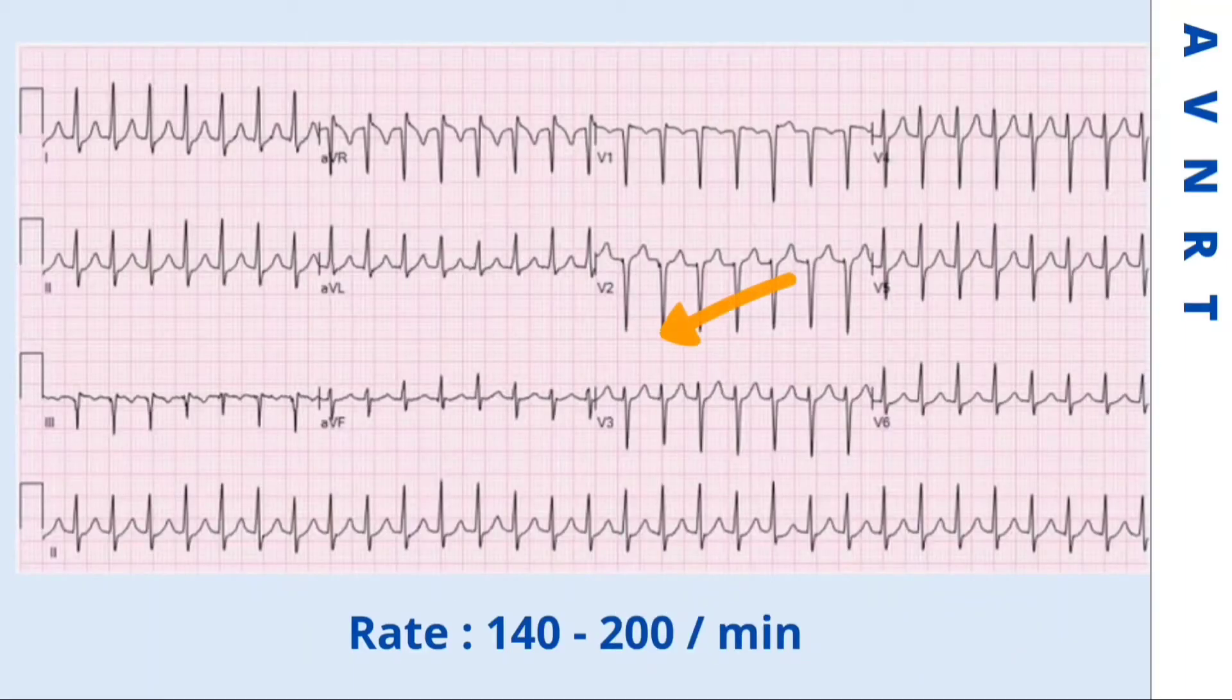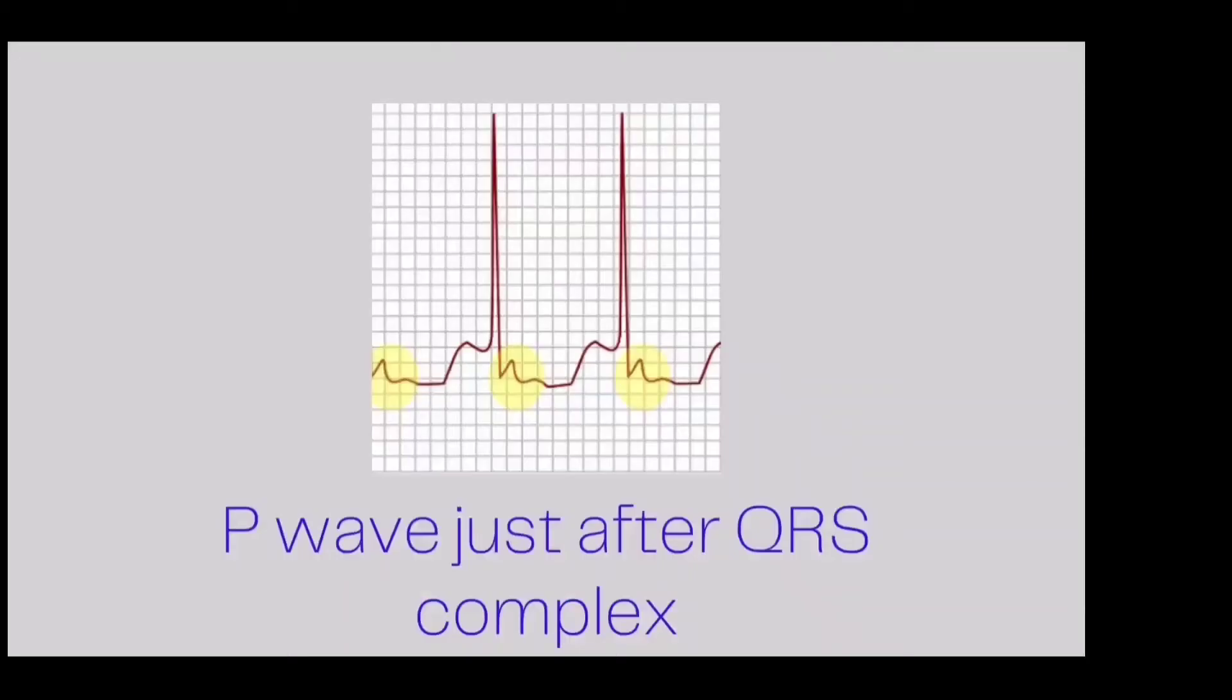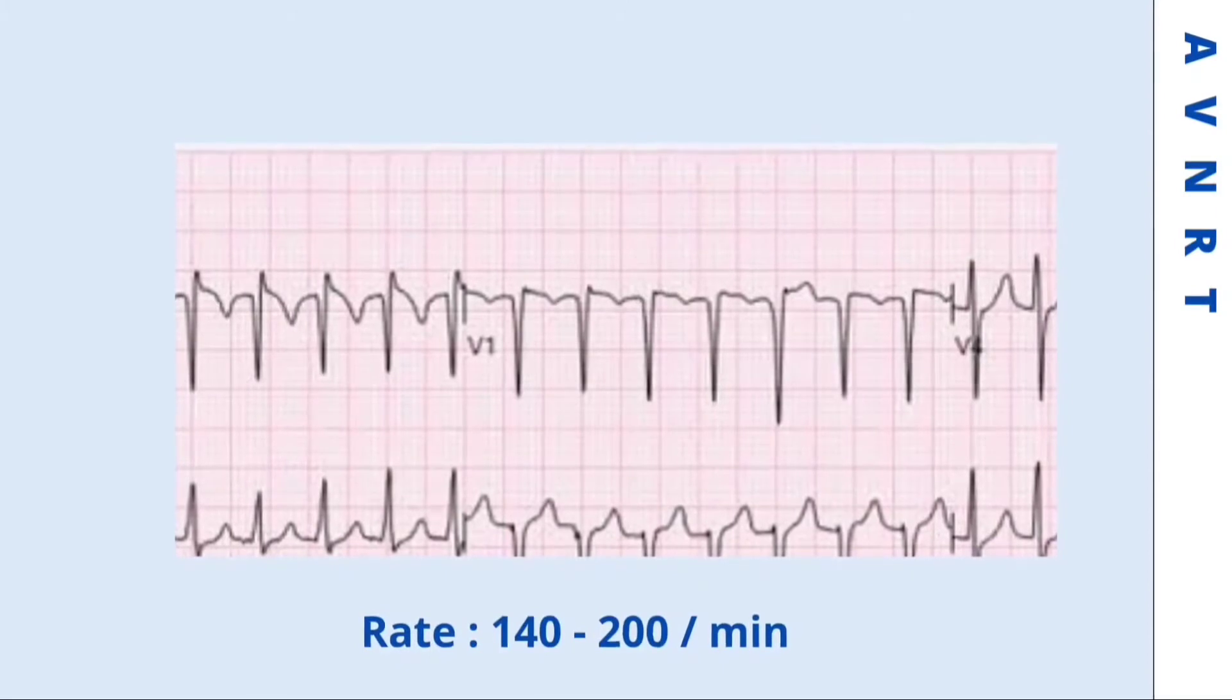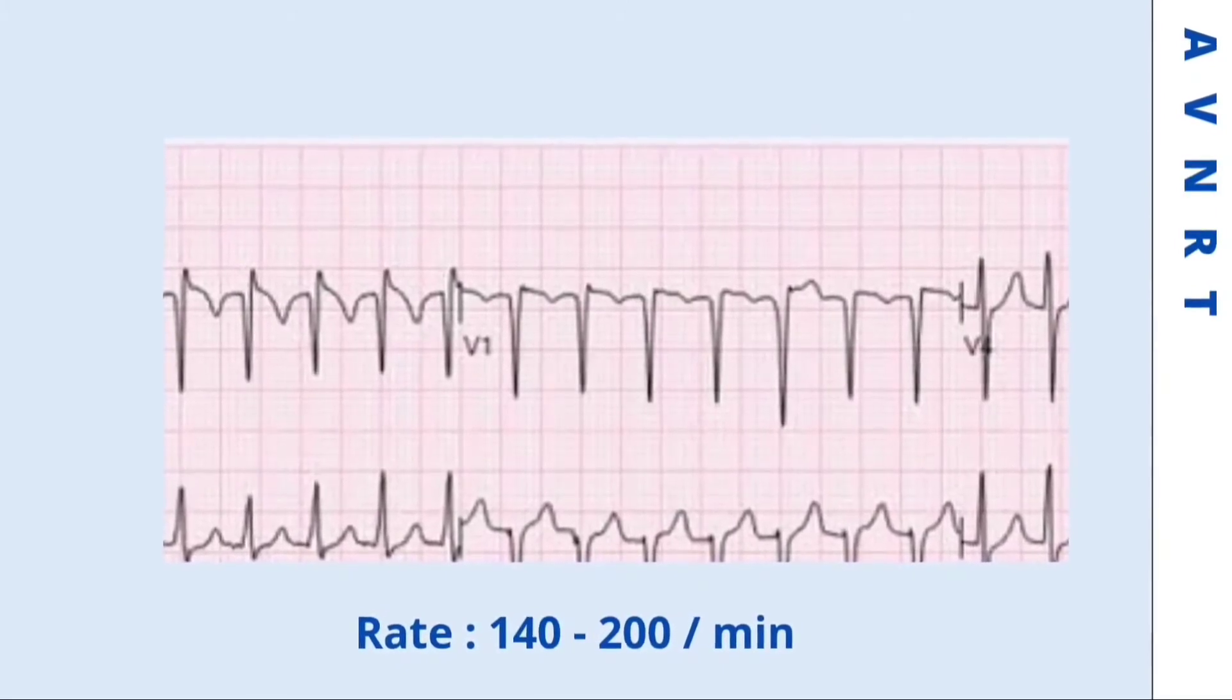What to remember about AVNRT is that atrial activity generally consists of inverted P waves occurring before, during, or after the QRS complex. It is best determined by lead V1 reading. The QRS complex can be normal or irregular.